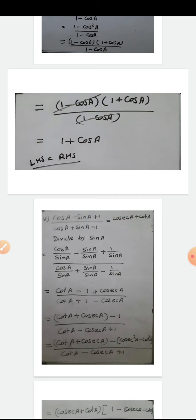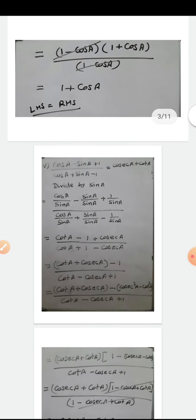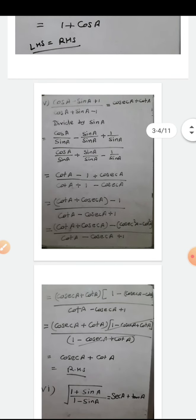After dividing by sin A, the denominator becomes cot A + 1 - cosec A. Now I rearrange: in the numerator I group cot A + cosec A and write minus 1 separately. For the minus 1, I substitute the identity cosec²A - cot²A = 1, so I replace the -1 with -(cosec²A - cot²A). Now I have two groups: (cot A + cosec A) and (cosec²A - cot²A) with a minus sign.